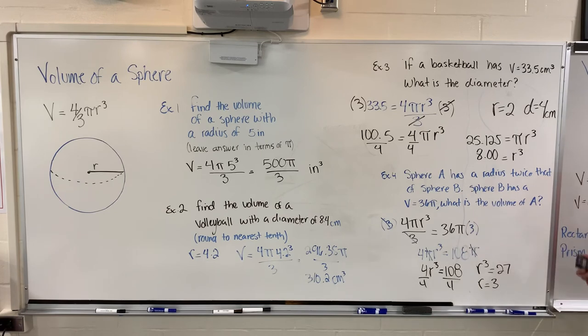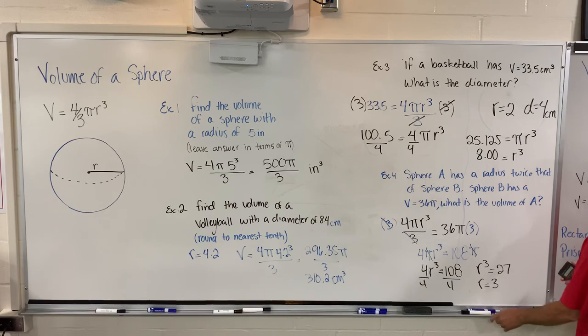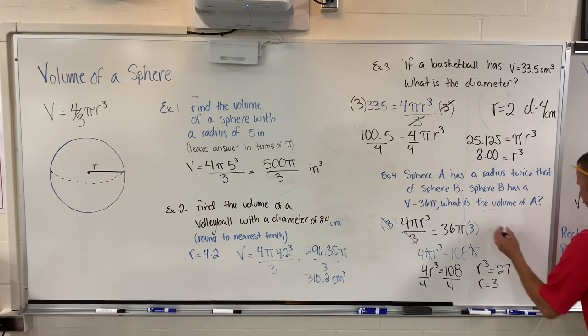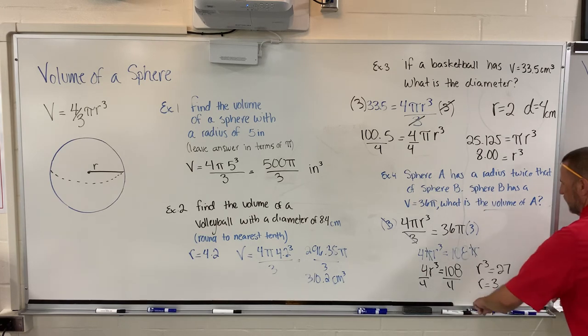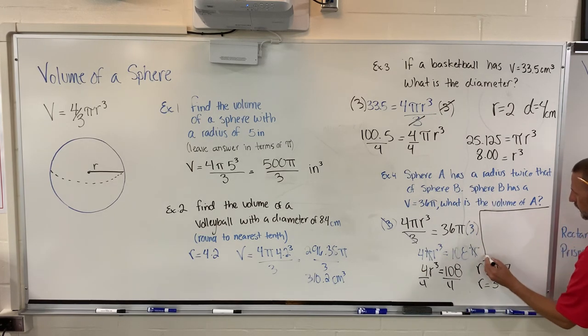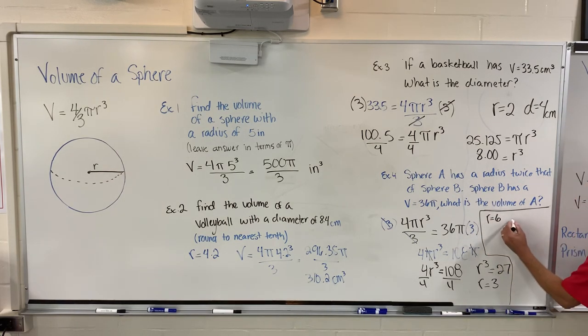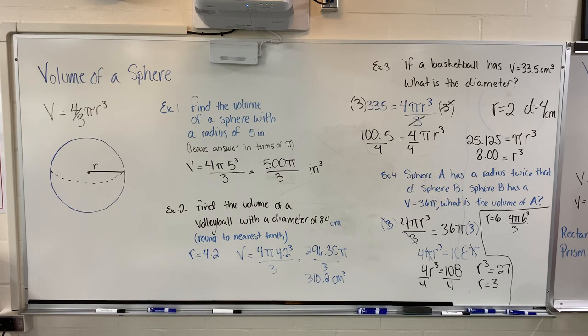Well if I want the answer, it says sphere A is double that, so I'm going to have a radius equal to 6. I'm way out of room here but I'll figure it out. My new radius is going to be 6, so 4 pi 6 cubed over 3. 6 times 6 times 6 is 216, times 4 is 864, and then divided by 3, and I end up with an answer of 288 pi.